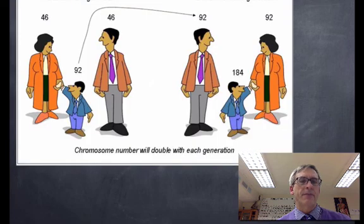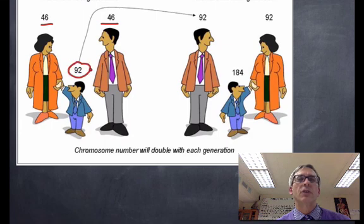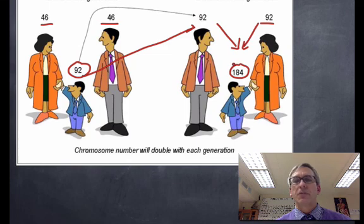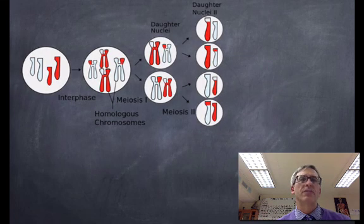If we didn't have meiosis and this reduction in chromosome number, we'd have huge problems. 46 is the normal diploid number. Without meiosis, the offspring would have 92 chromosomes. That child grows up, becomes an adult, produces offspring with someone else with 92 chromosomes. You'd be up to 184. In just a few generations, we'd have thousands of chromosomes, and it just simply wouldn't work. Fortunately, we have meiosis.